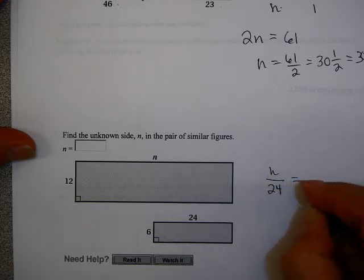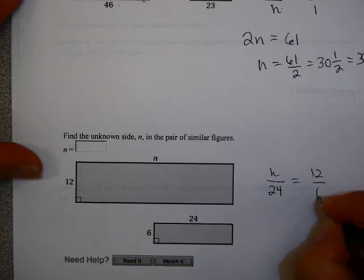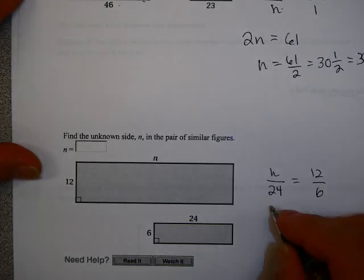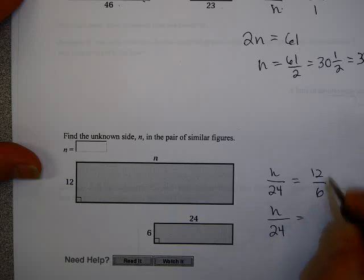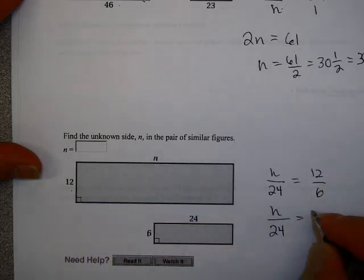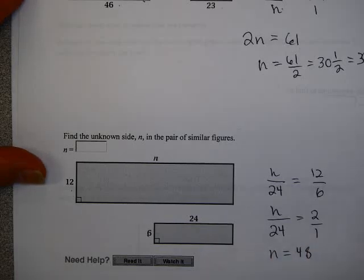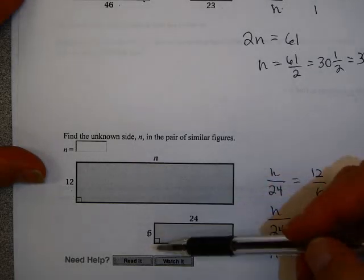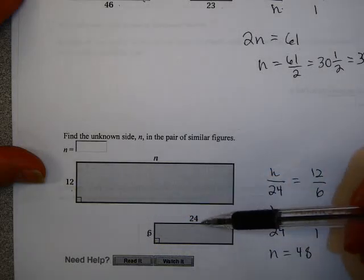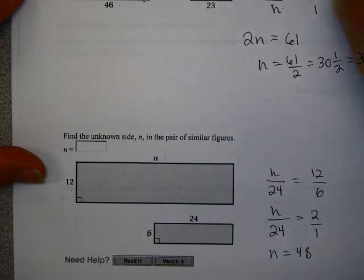So, n over twelve equals twelve over six would be one way to do this. I'm sorry, n over twenty-four. n over twenty-four equals twelve over six is two over one. So, that is n equals forty-eight. And that looks pretty clear. This is a scale factor of two, so I would double that side right there.